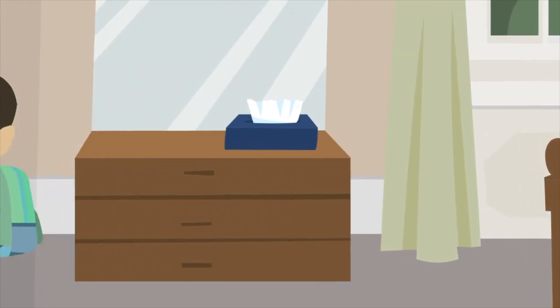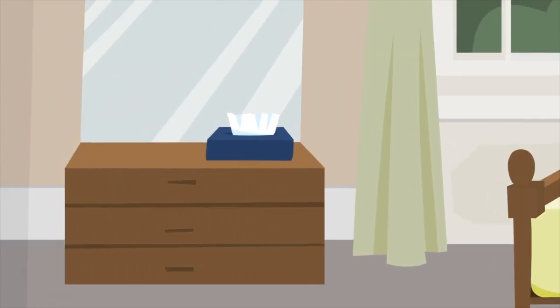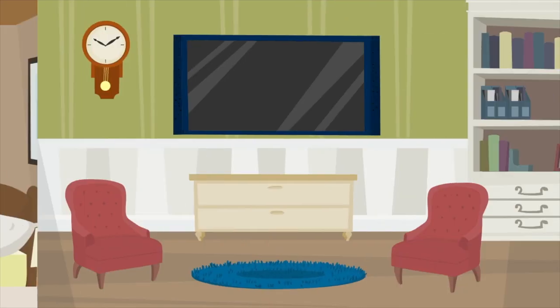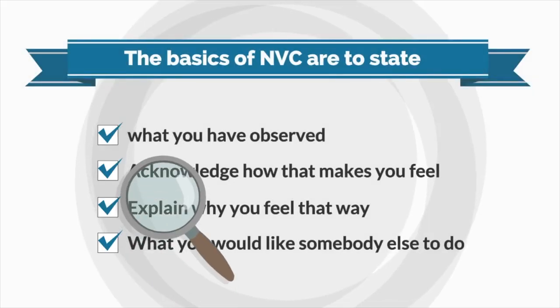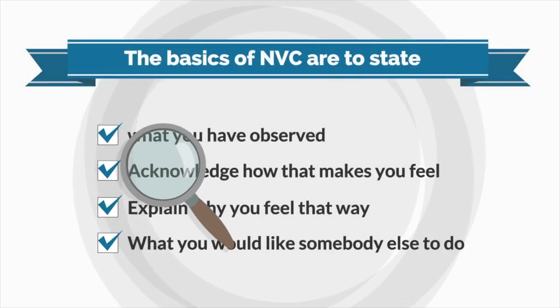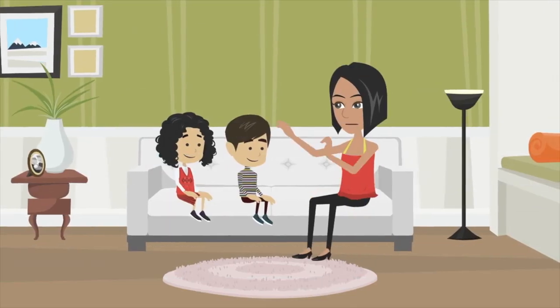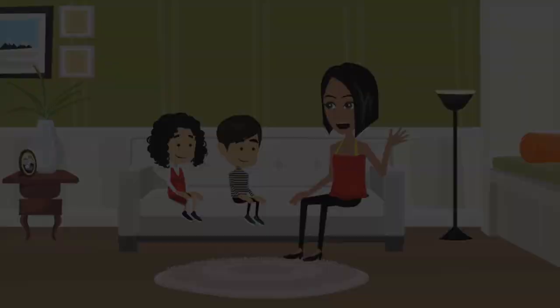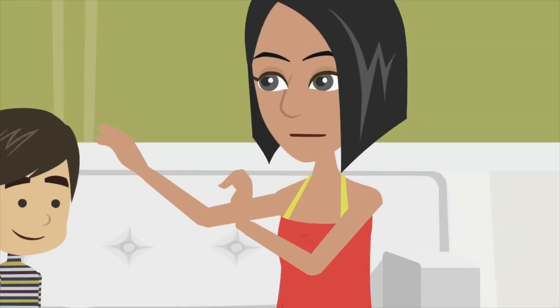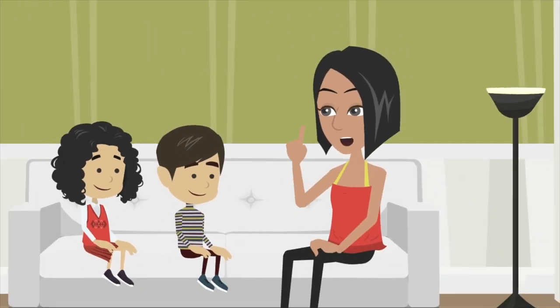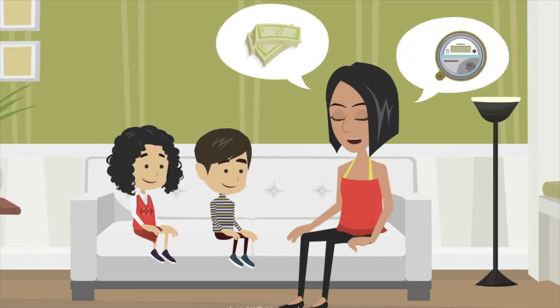For example, my children regularly leave their bedroom lights on when they go to school. Rather than shout at them or dock their pocket money, I might choose to adopt a nonviolent communication stance. Something along the lines of: "I see that you left your light on this morning when you went to school. This makes me feel frustrated, because I don't like wasting electricity or money. Are you willing to try and switch your lights off in the morning?"